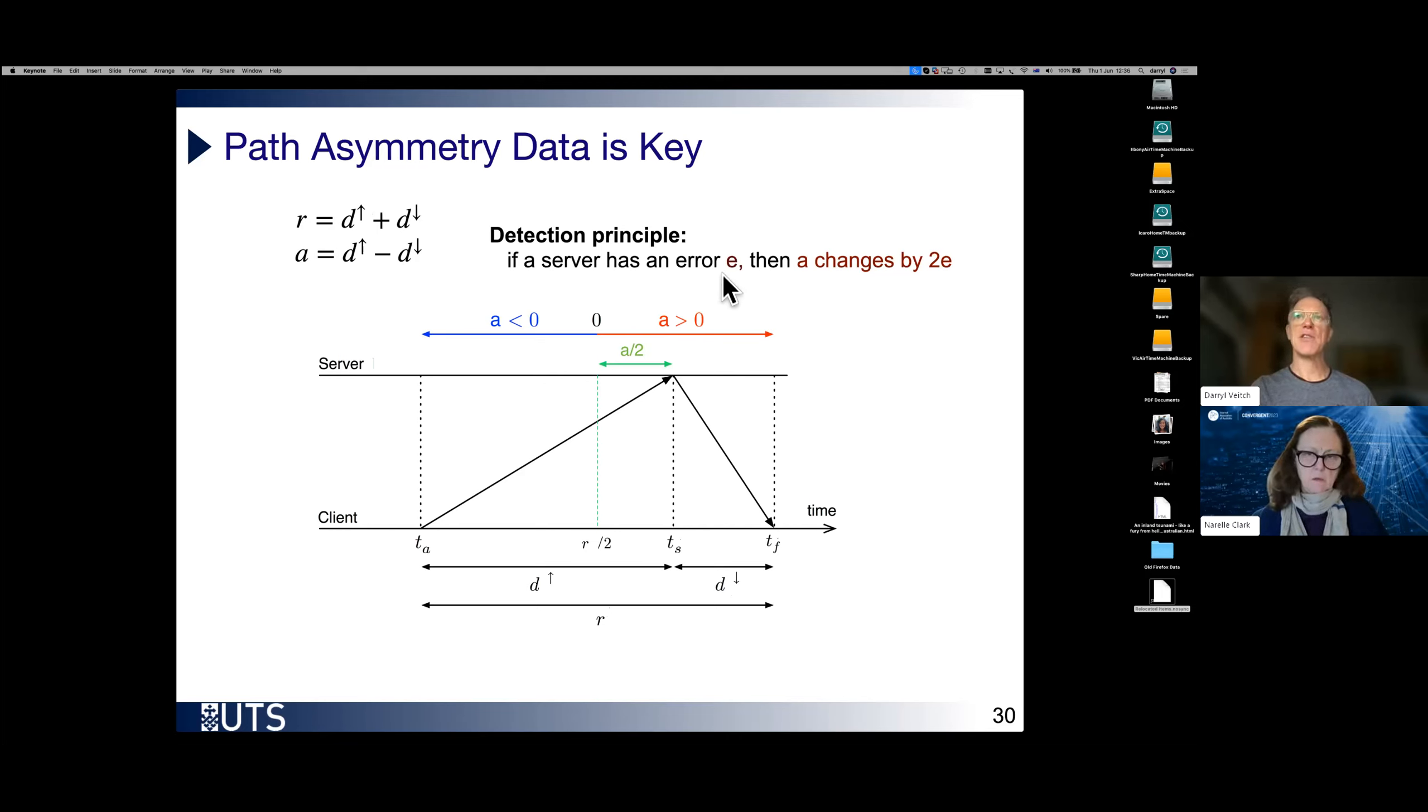So this is a figure that you saw before, and just reminding you that we have these minimum one-way delays in the forward and reverse directions. If we add them together, we get round trip time. Underlying asymmetry, I call it underlying because remember this is the minimum underlying value without congestion. So the detection principle is this. If a server has an error of size E, then asymmetry changes by 2E.